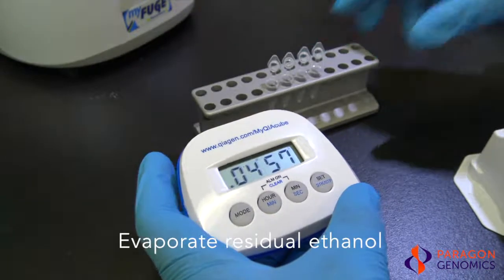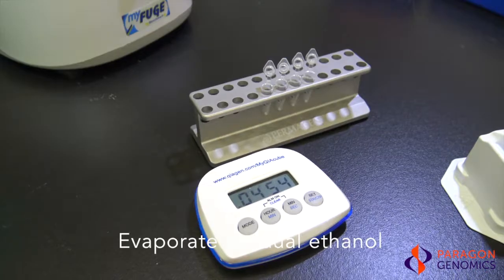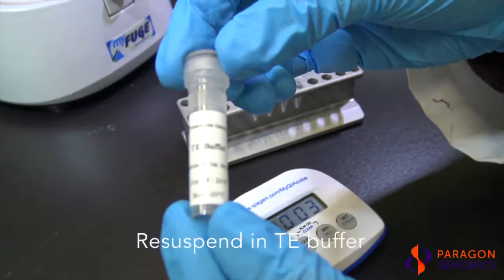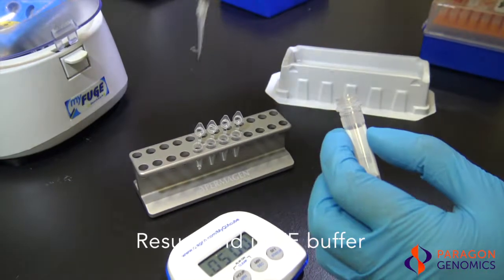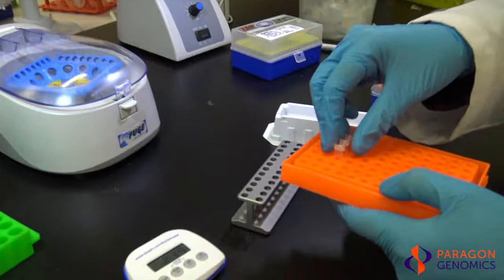Dry the magnetic beads for approximately 5 minutes with the tubes uncapped. After 5 minutes, add 10 µL of TE buffer to re-suspend the magnetic beads. Vortex thoroughly until all the beads are in solution. The sample is now purified and ready for the next step.